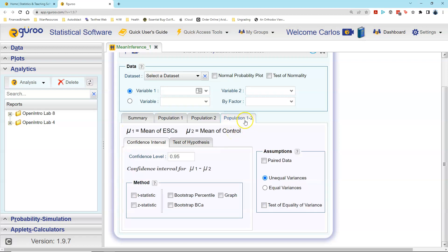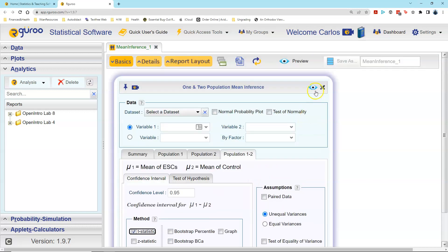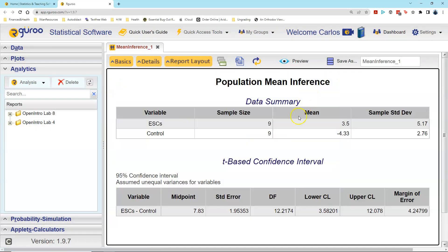So I now click on population one and two, because this is going to be my difference of two populations. I am doing a confidence interval. The confidence level is 95%, so I leave that as is. I'm doing a t-statistic test. It's a t-based test. Everything else remains as is. And then I now come up here and I click the preview button. Notice that I get all the values that I just typed in. These are the two groups of data that we have from our sample statistics that we were given.